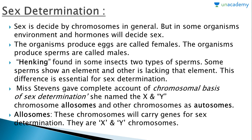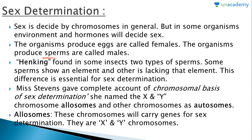Beginning with the lesson: sex is decided by chromosomes in general, but in some organisms environment and hormones will decide sex. The organisms that produce eggs are called females; the organisms that produce sperms are called males.